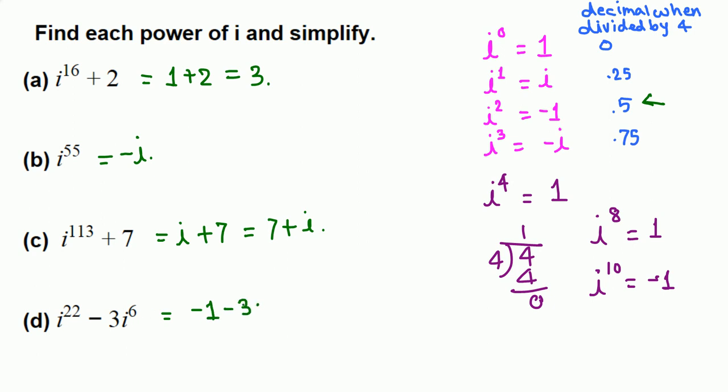The 0.5 decimal means again negative 1. So i^6 is negative 1, and 3 times negative 1 is negative 3. We have negative 1 minus negative 3, which is negative 1 plus 3, equals 2.